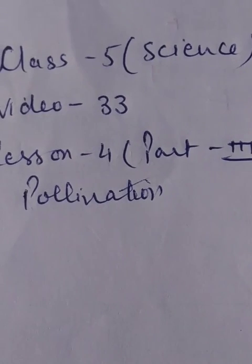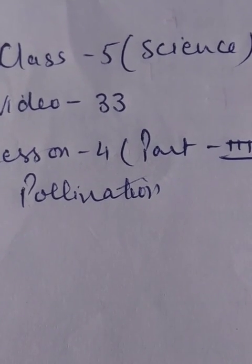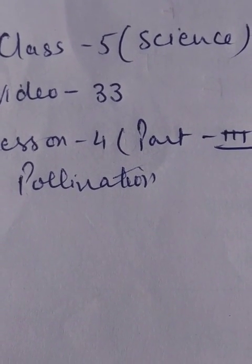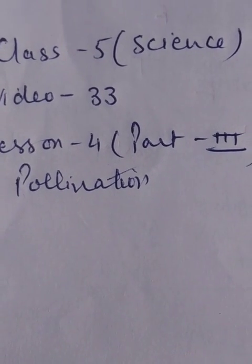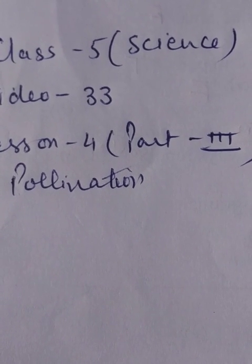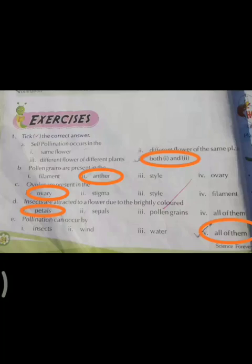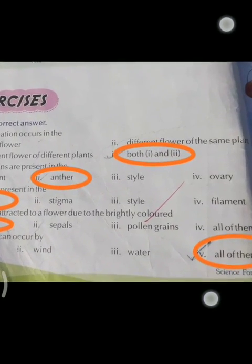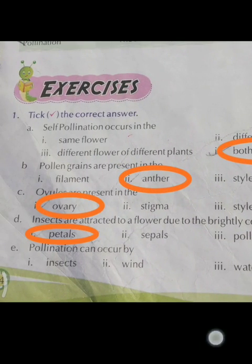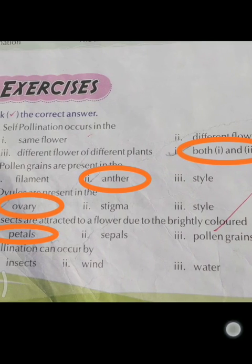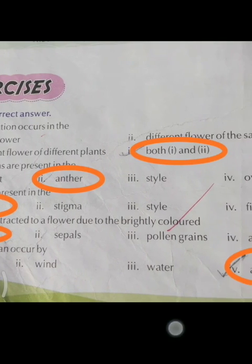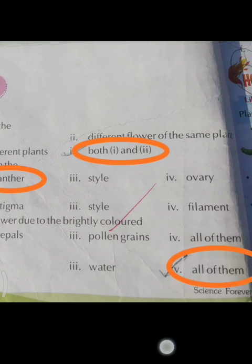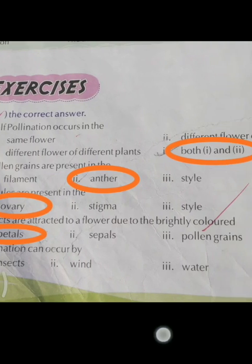Hello students, it is video number 33 of Class 5 Science. We will continue with lesson number 4, Pollination. It is part three, book exercises. First question: self-pollination occurs in the same flower, or different flower of the same plant. Both one and two is the correct answer.